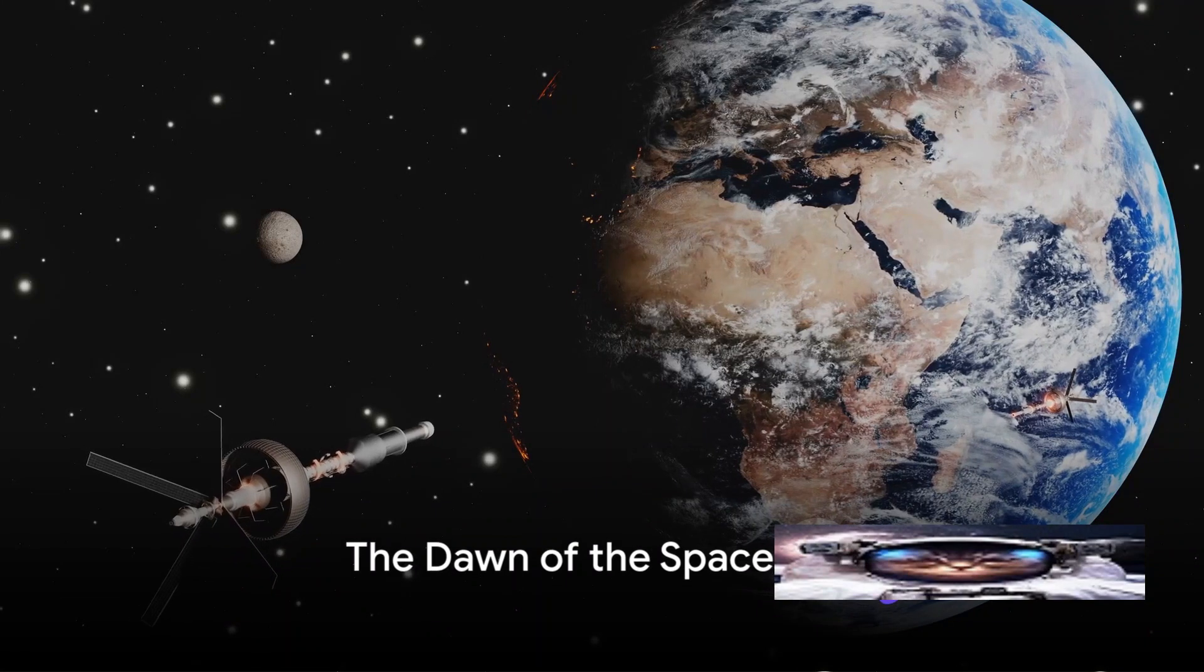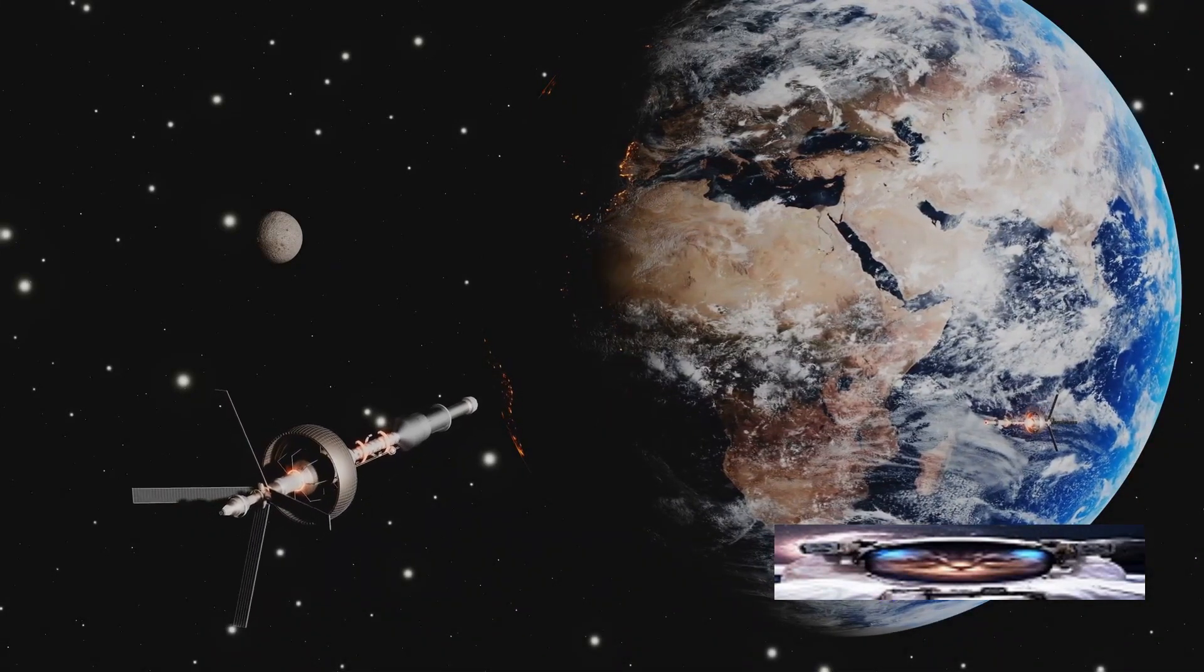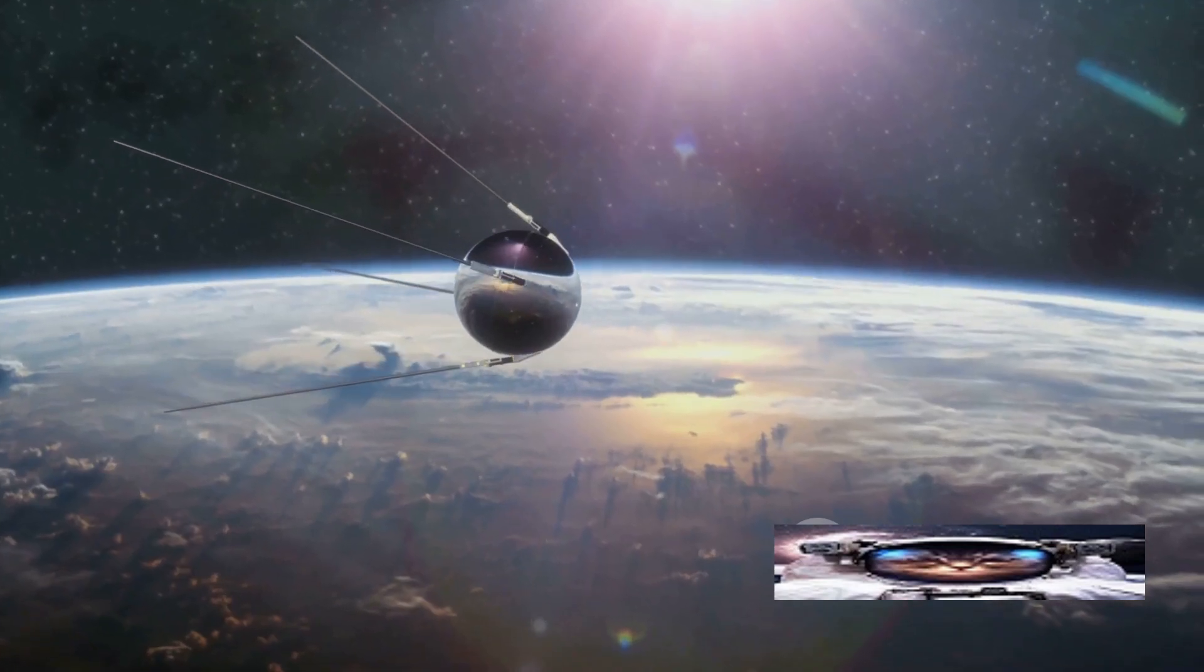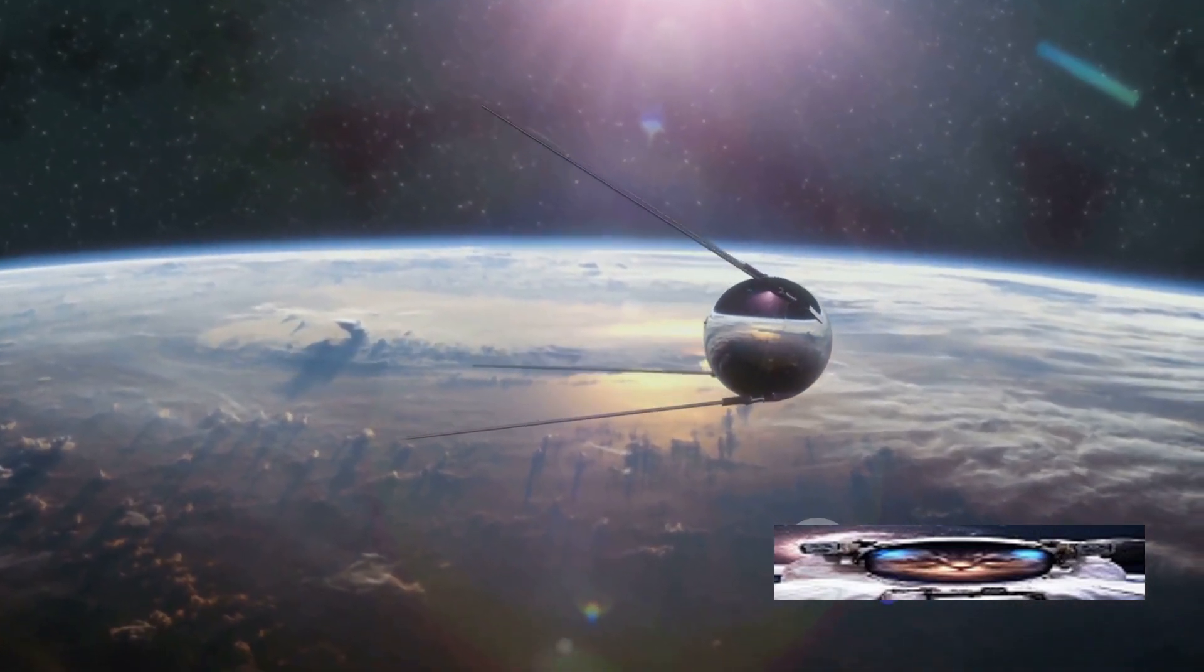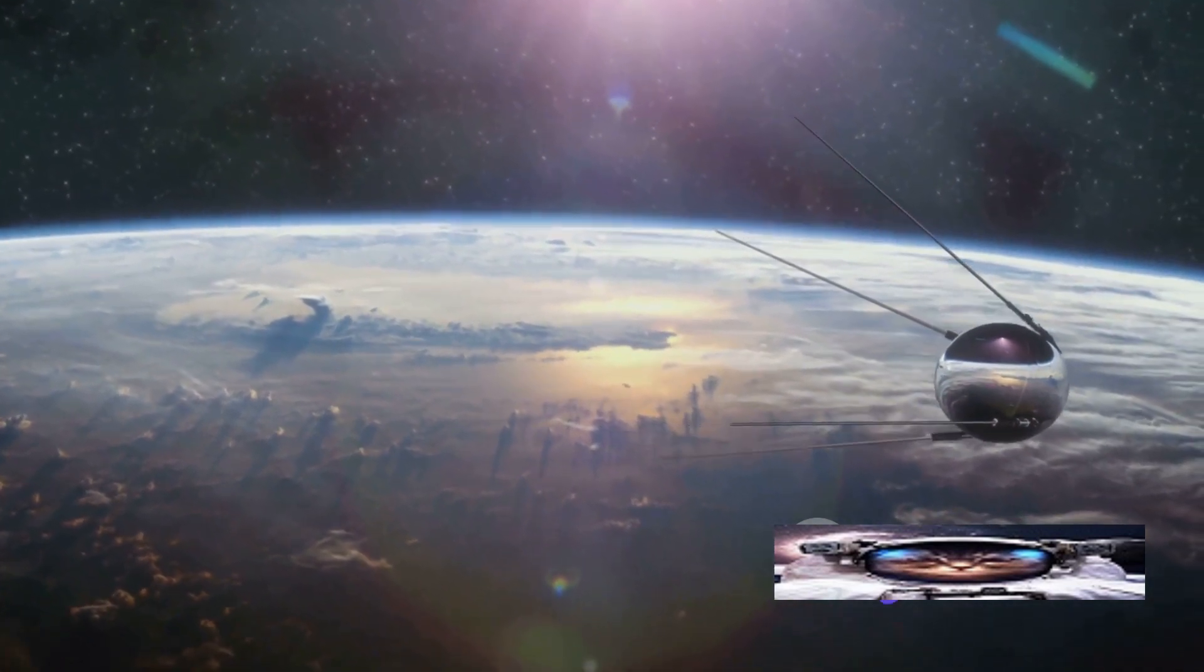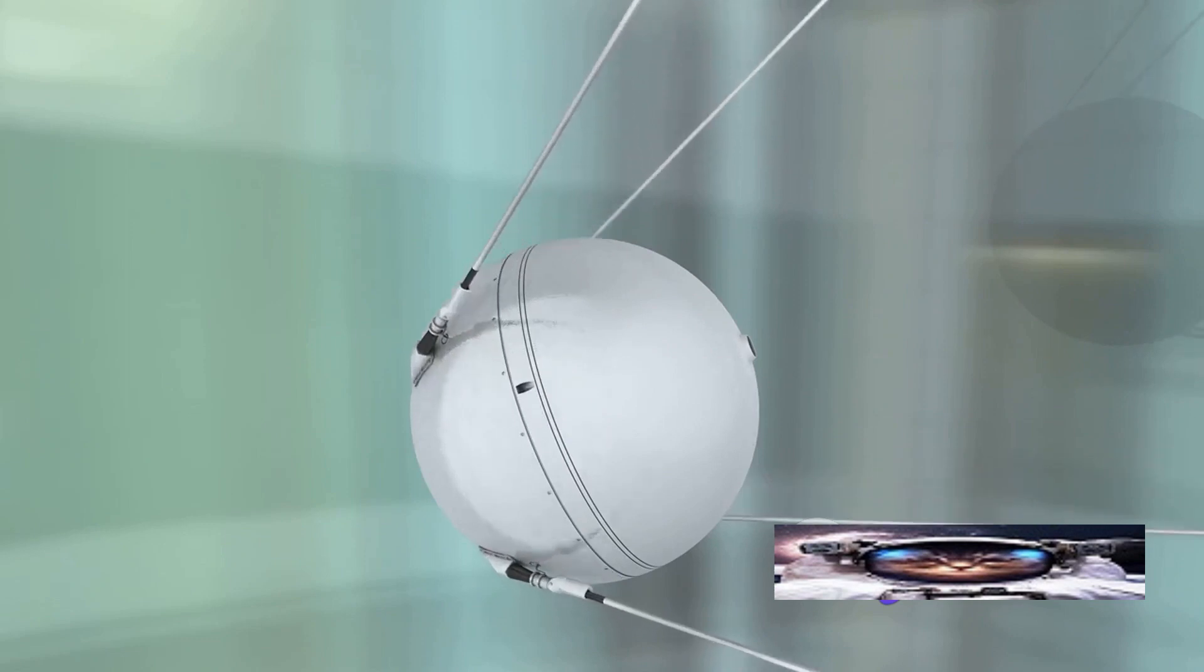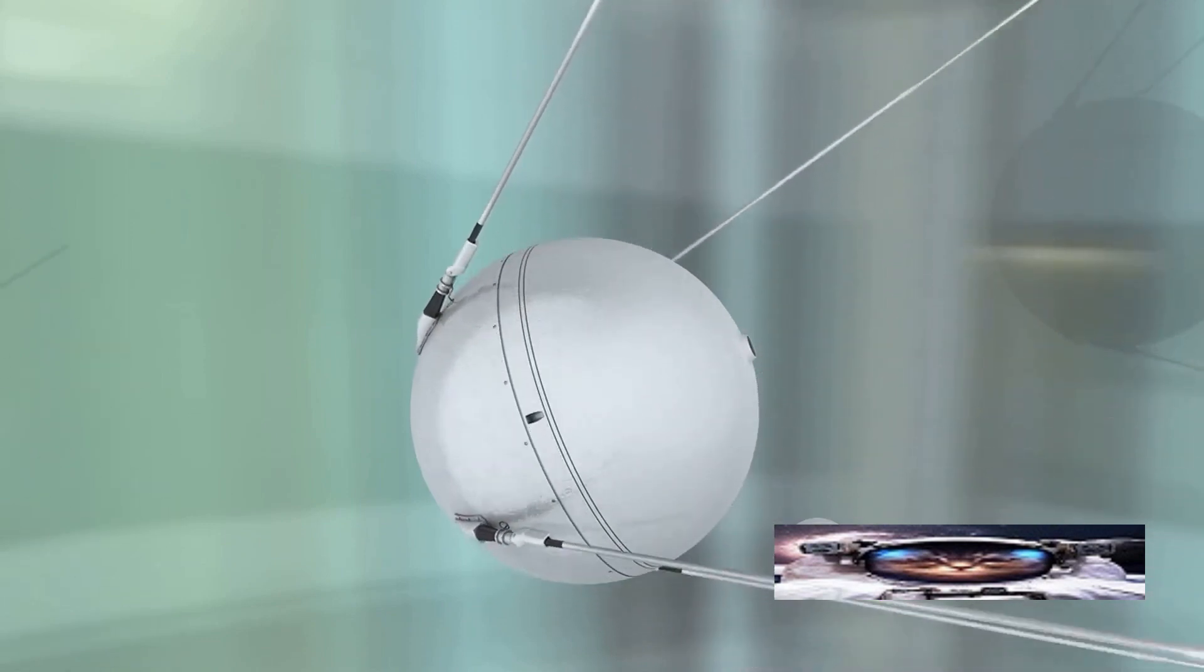The 20th century marked the dawn of the space age, a time of discoveries and new possibilities. As humanity entered the 1900s, a new era of exploration was on the horizon. The spark that ignited this revolution was the launch of Sputnik, the world's first artificial satellite. In 1957, the Soviet Union catapulted us into the space age, launching Sputnik into Earth's orbit and marking the beginning of our journey into the great unknown.